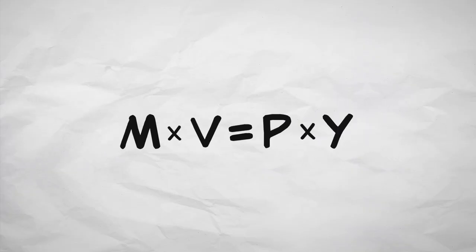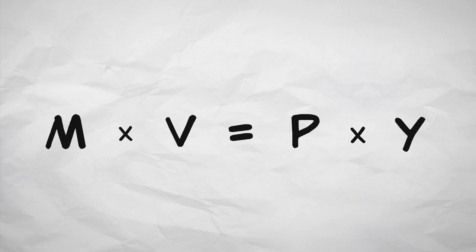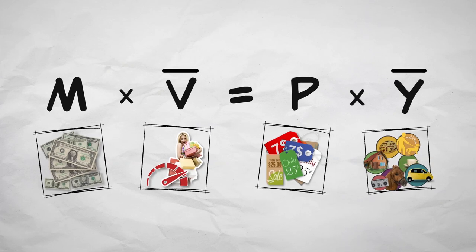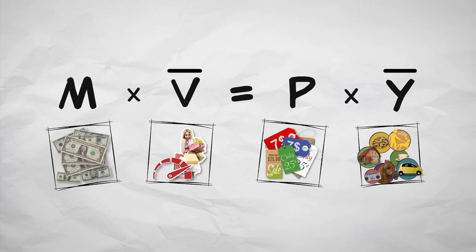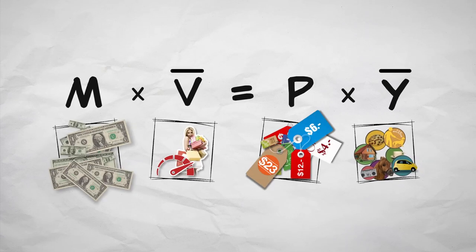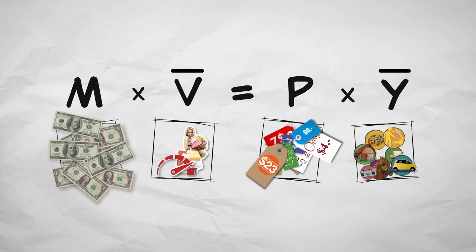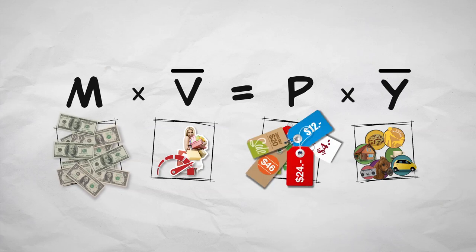Recall the equation of exchange: MV equals Py. Earlier, we used this equation to explain inflation. Since V and Y are relatively stable, the only explanation for large and sustained increases in prices is an increase in the money supply, M. We also showed empirically that in the long run, when M doubles, then P doubles, just as the theory predicts. In other words, in the long run, money is neutral.